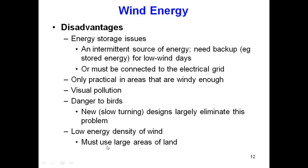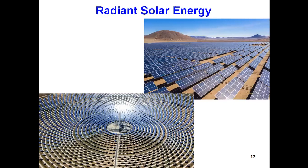Wind has a low energy density, so large areas of land and a large number of turbines must be used. In a hydropower plant we typically install one to four turbines to capture the energy, whereas for wind we must install a huge number of turbines to capture the available wind energy.